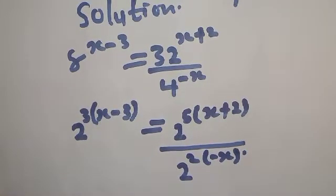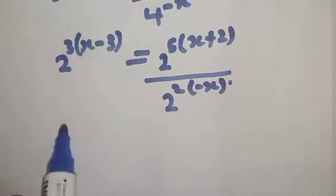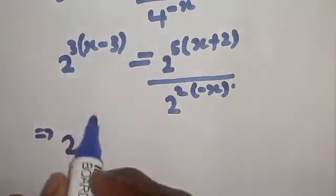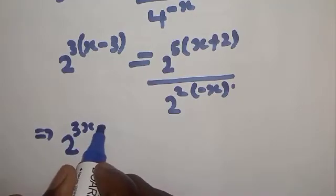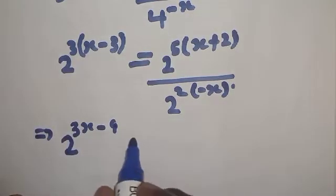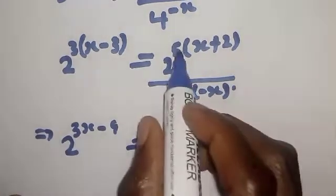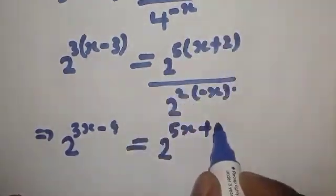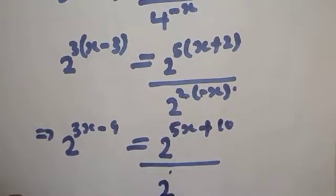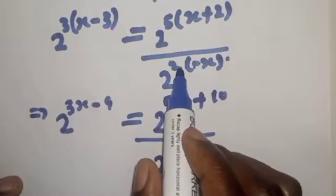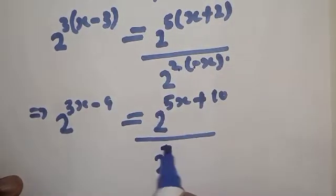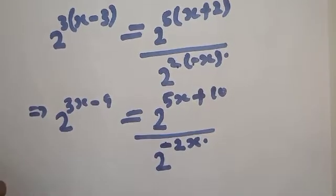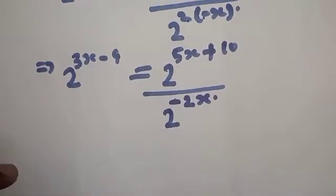Let's open the brackets. We have 2 raised to power 3 times x minus 3 times 3, which gives 3x minus 9. That will be equal to 2 raised to power 5 times x plus 5 times 2, which is 5x plus 10, over 2 raised to power 2 times minus x, giving us minus 2x.